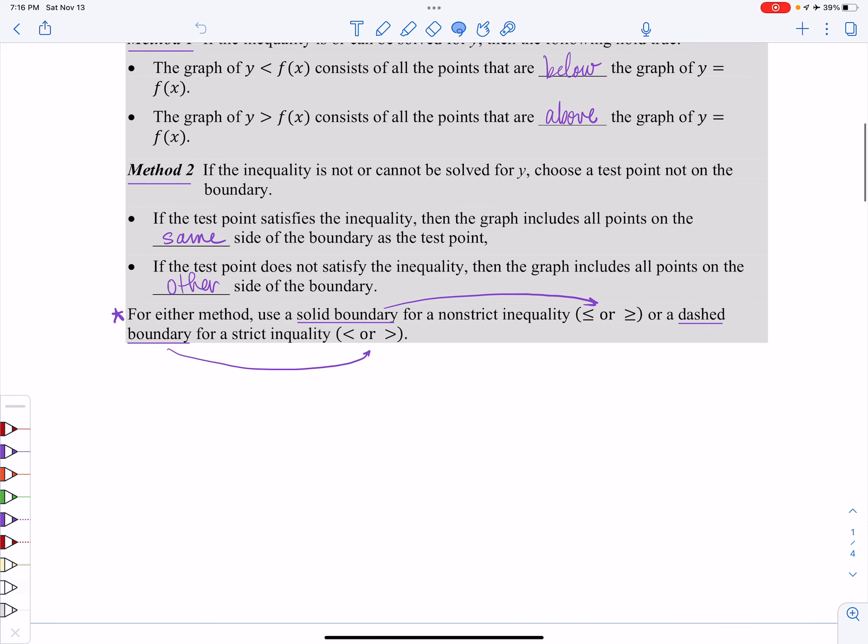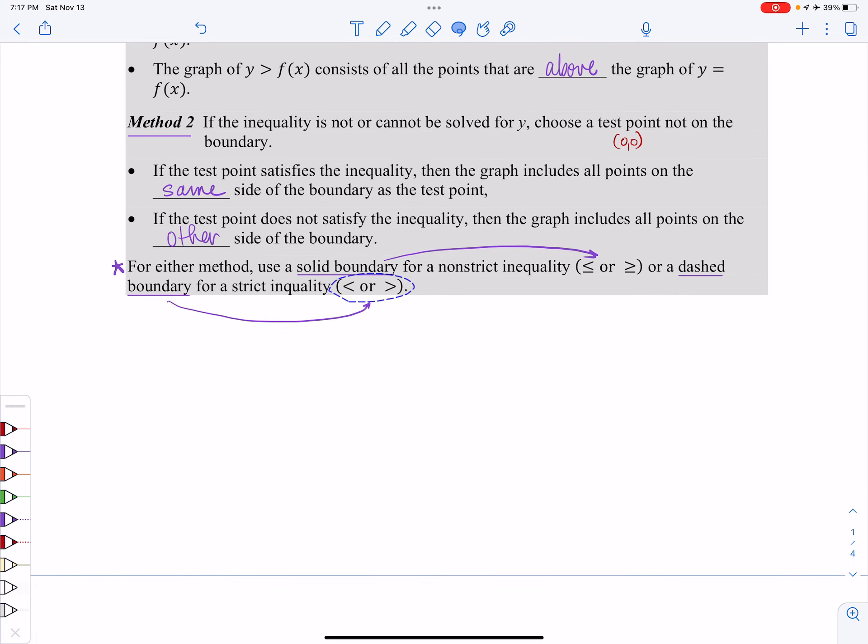Method number two, if the inequality does not have y isolated, then what we're going to do is choose a test point. I'll tell you right now, my favorite test point is the point 0,0. It's not always possible to use that as a test point, but it is my favorite one if I'm able to use it. If the test point satisfies the inequality, then your graph, the shaded region, includes all the points that are on the same side of the boundary as the test point. If the test point does not satisfy the inequality, then your shaded region includes all the points on the other side of the boundary. Now, if you have an equal sign in your inequality, then you're going to be drawing a solid boundary, a solid line, or whatever your graph happens to be is going to be solid. But if there's no equal to, then you'll be drawing a dashed boundary, a dashed line, or whatever it is that your graph is.